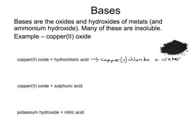Generally speaking, a base plus an acid makes a salt plus water. You'll have to learn the formula for copper oxide, which is CuO, and hydrochloric acid, which is HCl. You'll also have to learn the formula for copper chloride, which is CuCl₂. Balancing this equation, we can see that there are two Cls on the right-hand side and only one Cl on the left, so we need to put a 2 in front of that — and that also balances up the Hs on both sides.